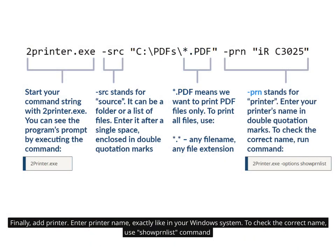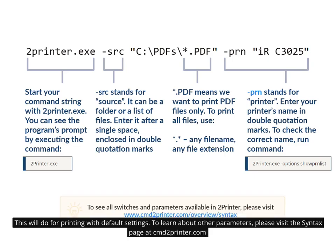Finally, add the printer parameter. Enter the printer name exactly as it appears in your Windows system. To check the correct name, use the show prnlist command. This will do for printing with default settings. To learn about other parameters, please visit the syntax page at cmd2printer.com.